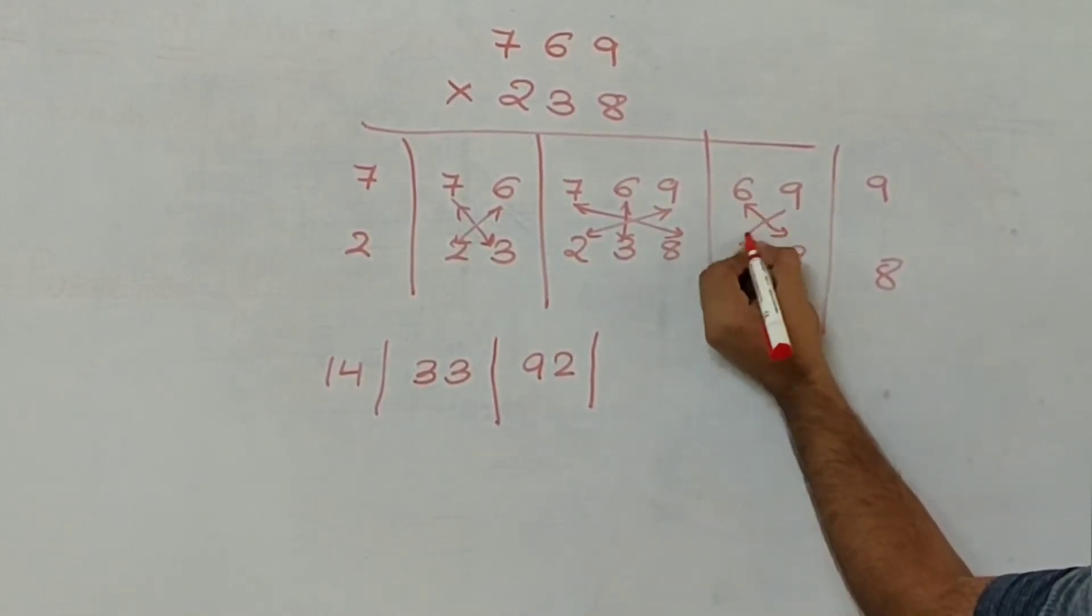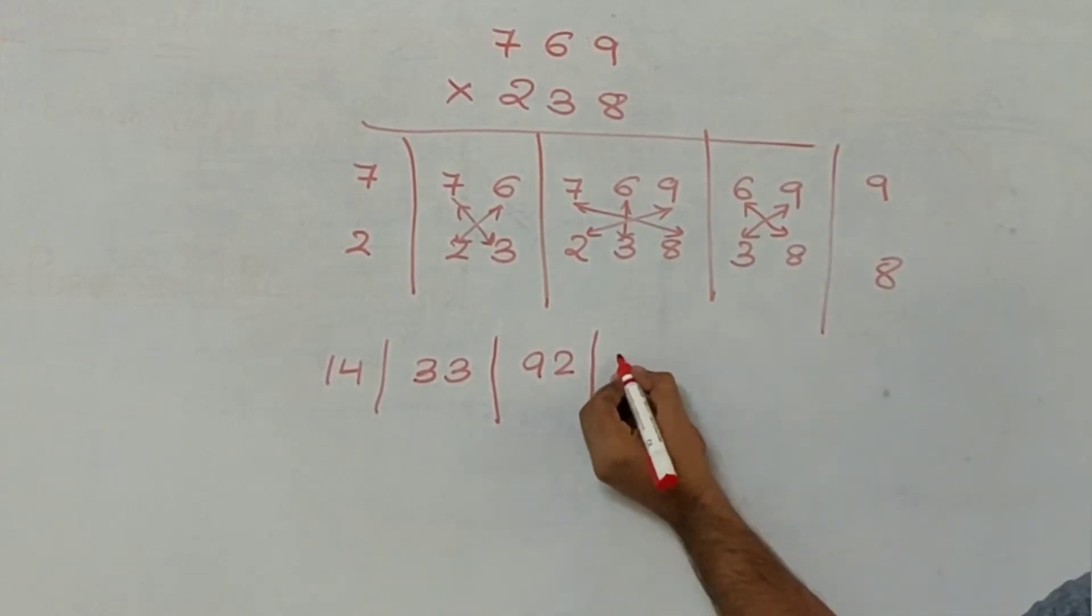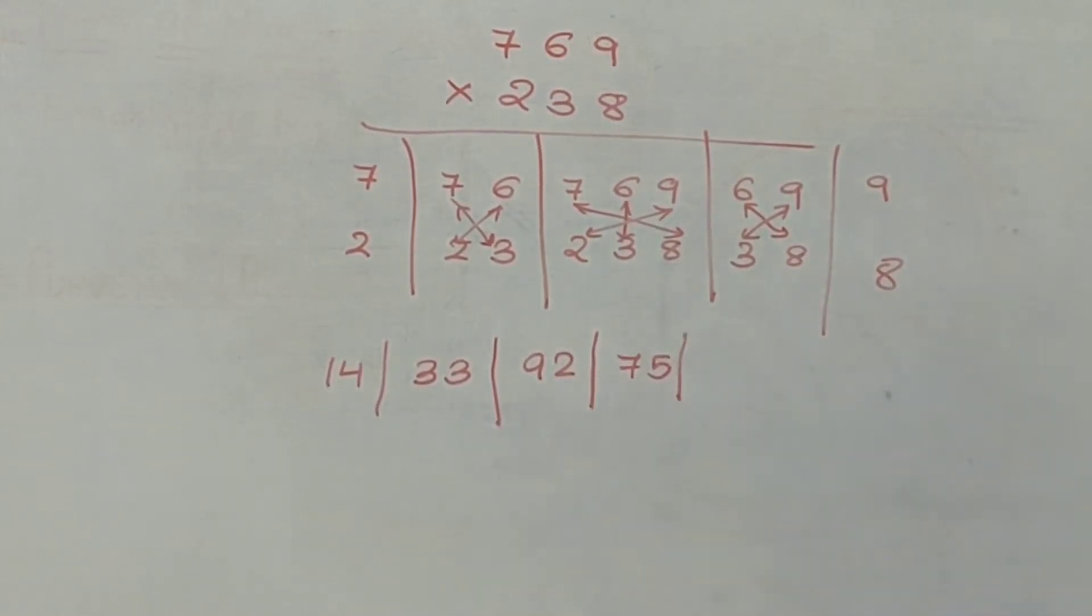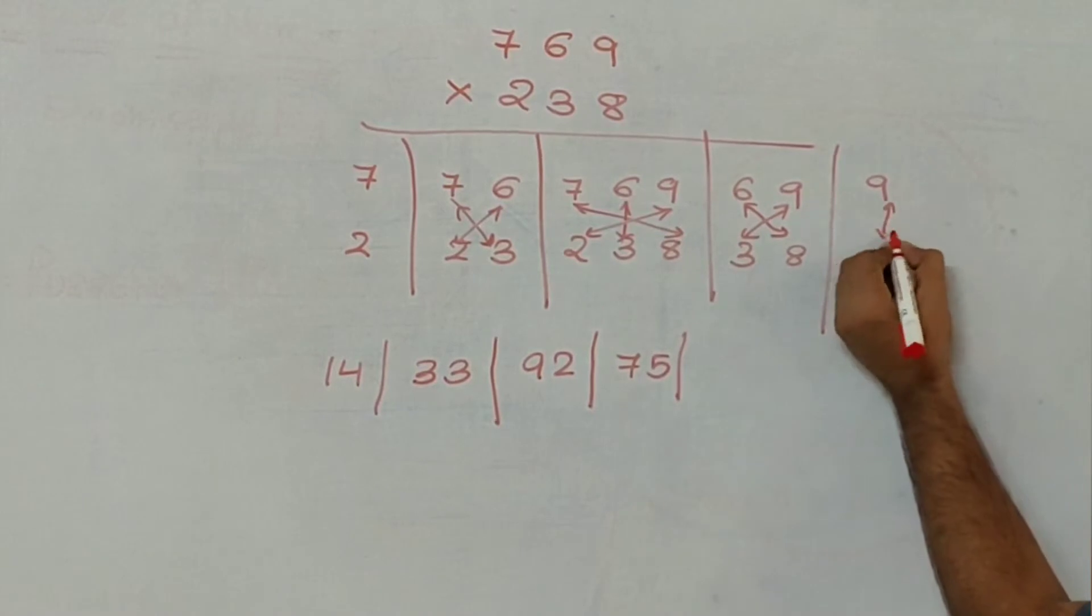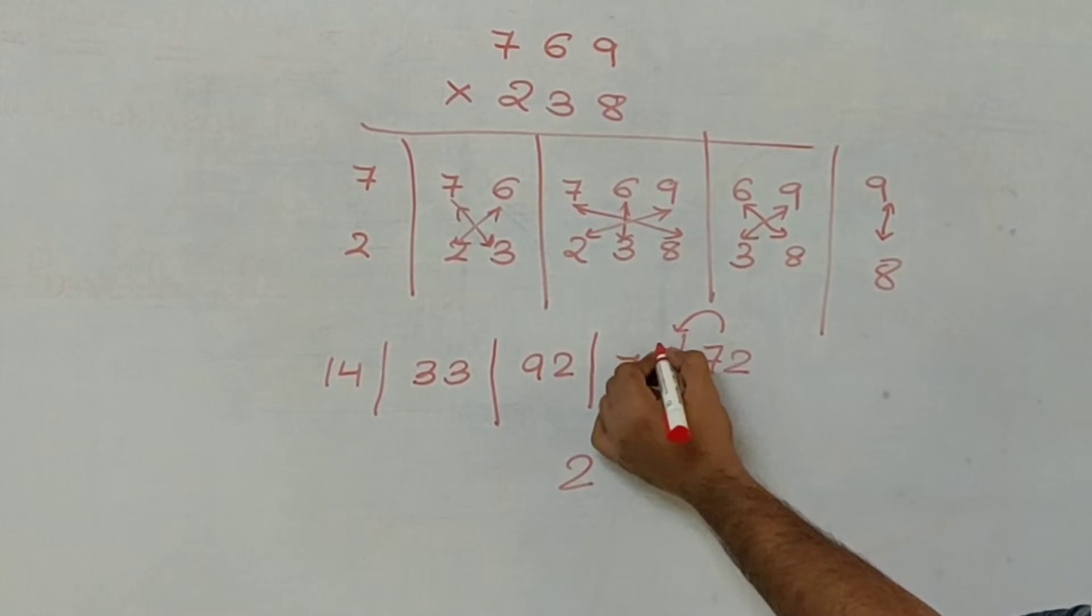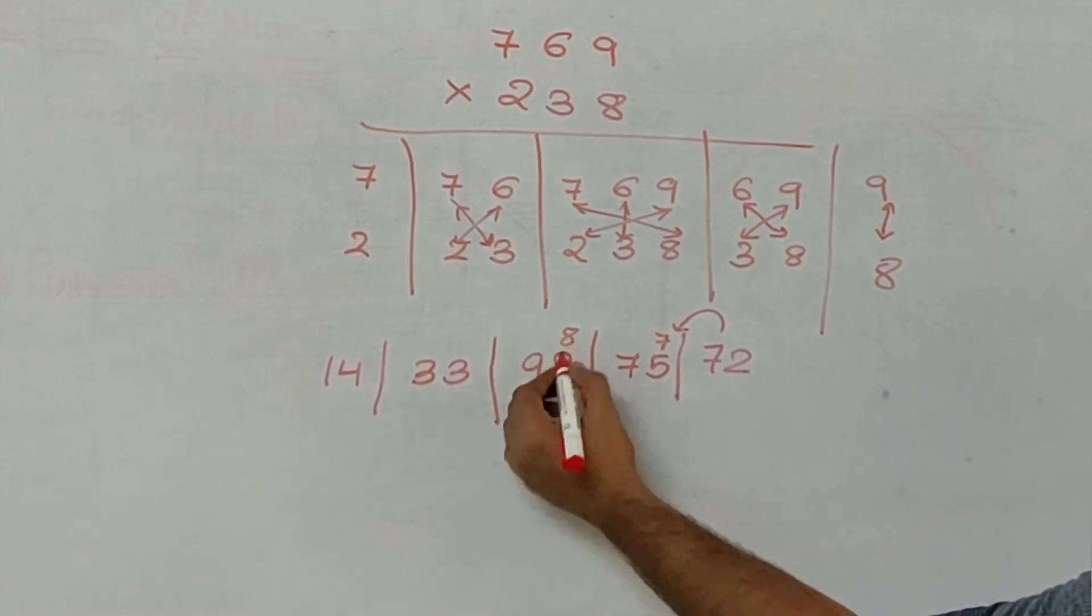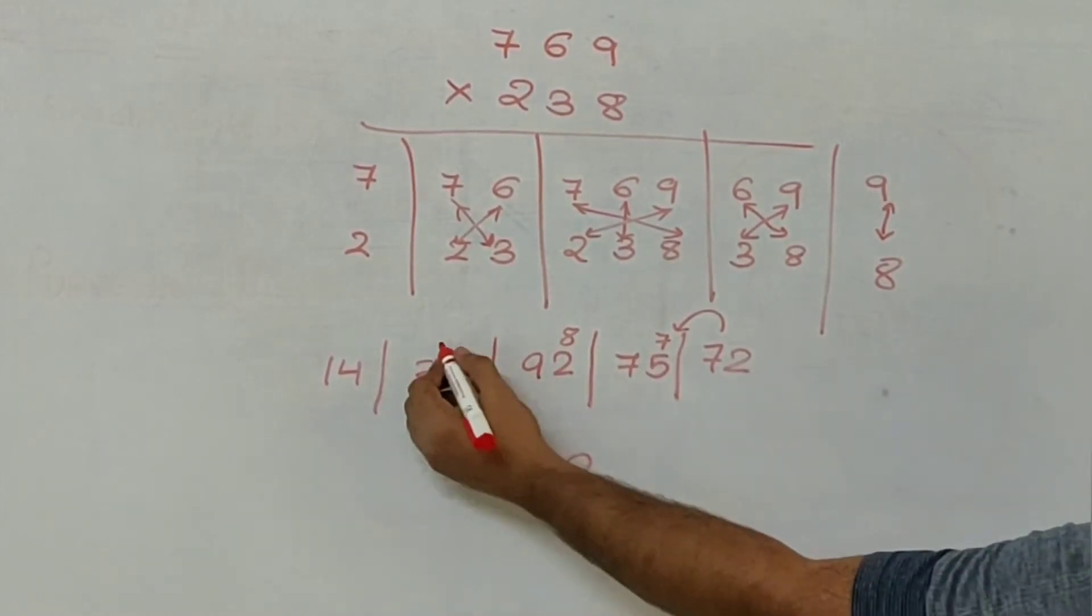6, 8 is 48 plus 9, 3 is 27. So 48 plus 27 makes it 75. And 9, 8 is again 72. I will keep units place here. I will add 7 to the previous column. 75 plus 7 is 82. 8 here. 92 plus 8 gives 100.